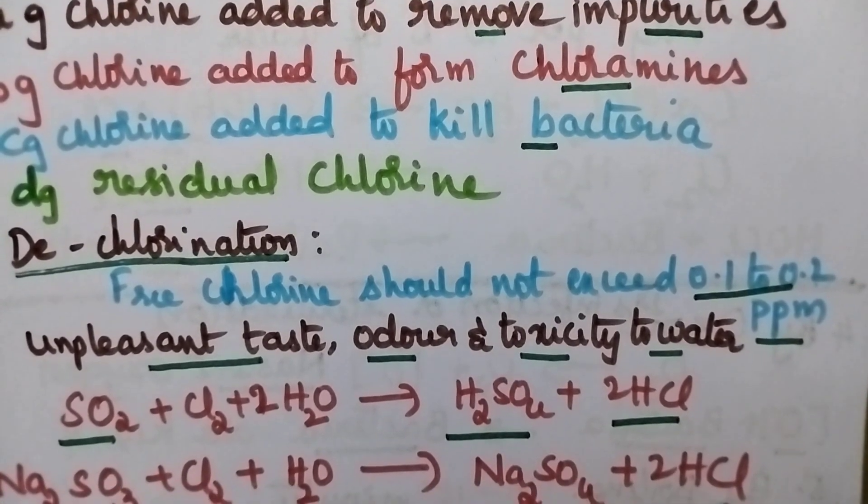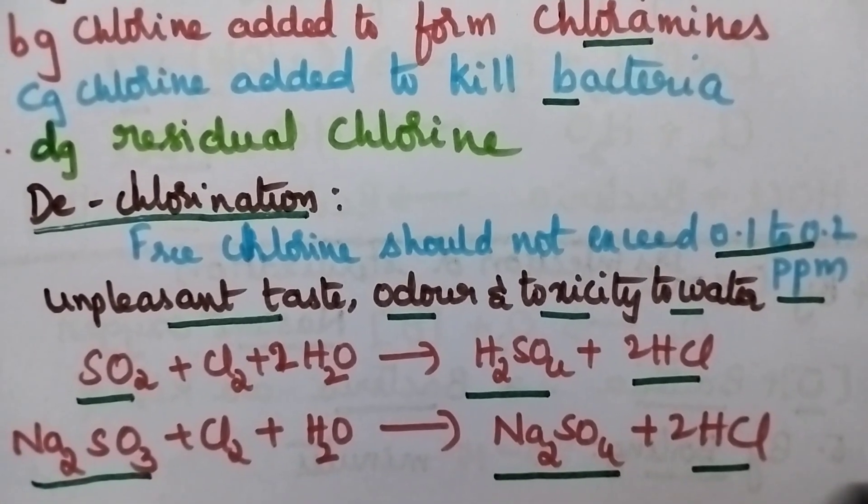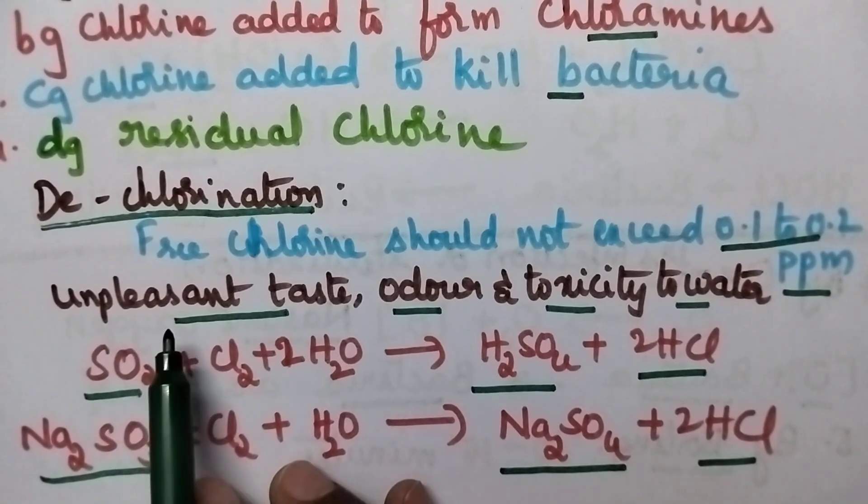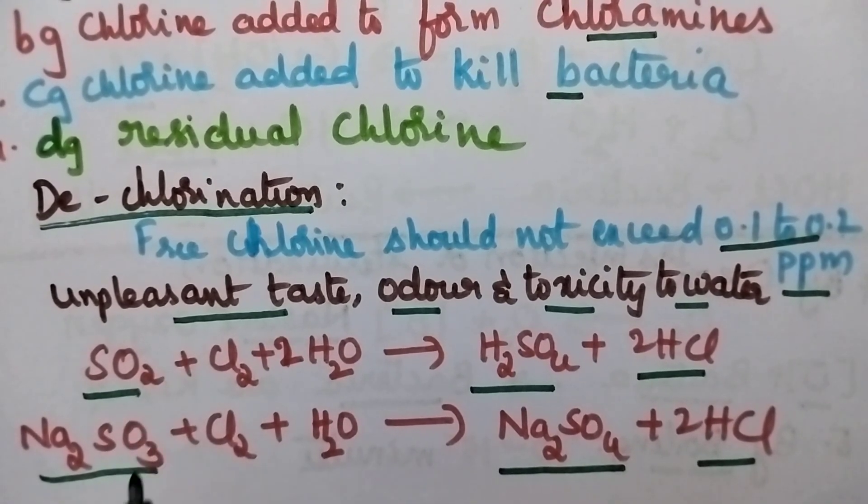Hence, excess chlorine can be removed through the dechlorination process. It involves the treatment of chlorinated water with sulfur dioxide or sodium sulfite.